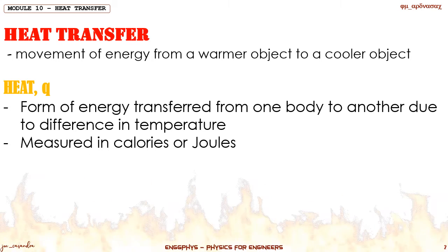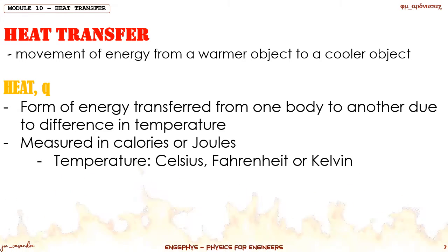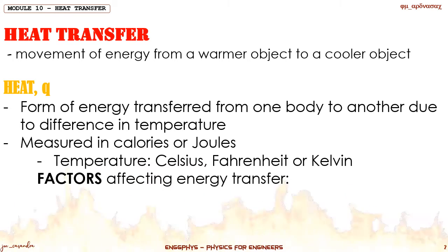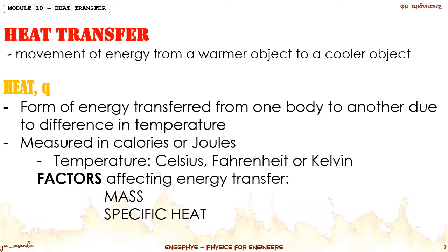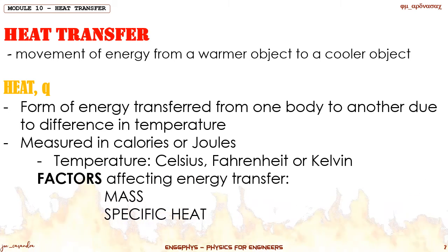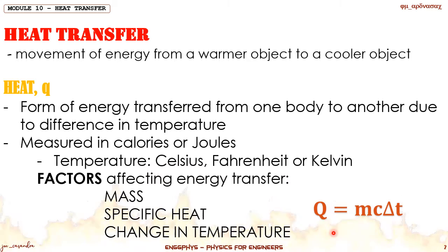Heat is measured in calories or joules. For temperatures used in heat computations, these would be defined using Celsius, Fahrenheit, or Kelvin. The factors that affect heat transfer include the mass of the objects experiencing the energy transfer, the specific heat of that object, and the temperature. With that, we can determine the equation for heat: Q = MCΔt. This will be our main equation for almost all of the problems we'll be discussing in heat transfer.